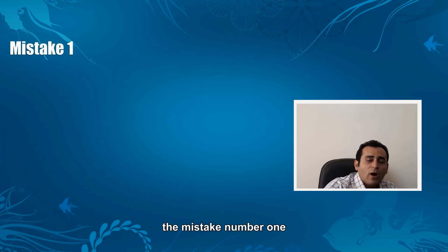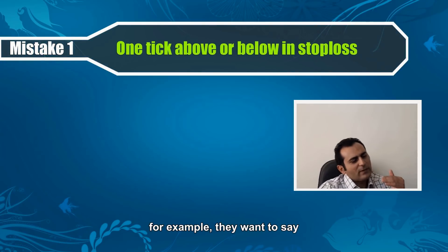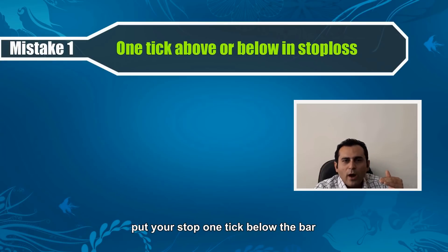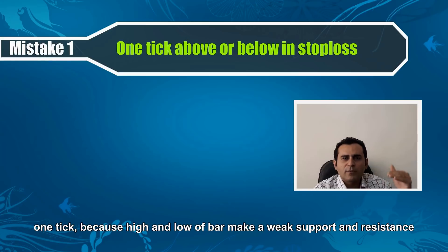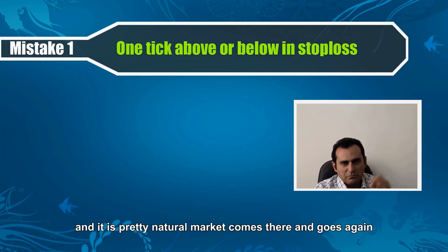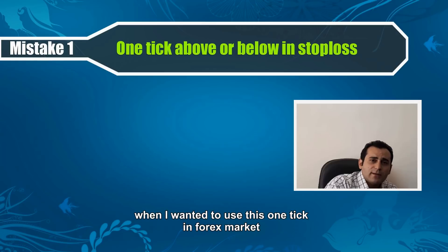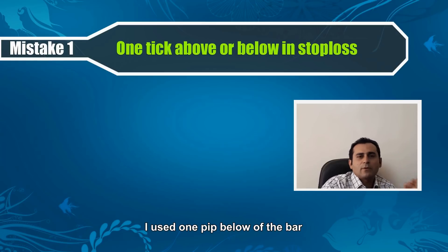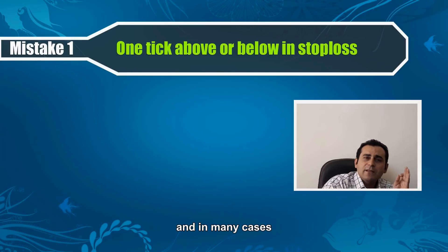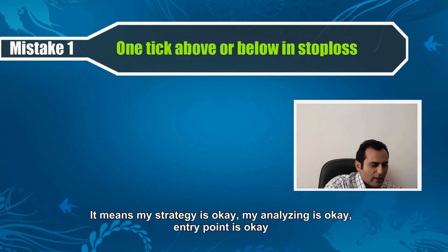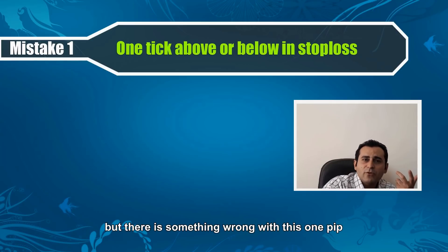Mistake number one: in those books, when they want to say put your stop here, they said put your stop one tick below the bar. One tick, because the high and low of the bar makes a weak support and resistance, and it's pretty rational — market comes there and goes again. When I wanted to use this one tick in Forex, I used one pip below the bar. In many cases, I've seen price come back, take my stop out of the market, and then go in my direction. My strategy was okay, my analysis was okay, my entry point was okay, but there was something wrong with this one pip.